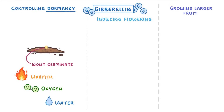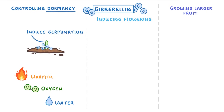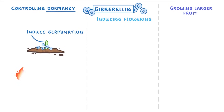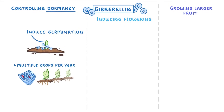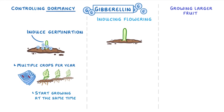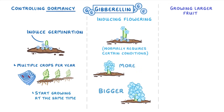By exposing seeds to gibberellin, farmers can induce germination at times of the year when it wouldn't normally happen. This means they can grow multiple crops per year and also ensure that all the plants start growing at the same time. The same thing works for inducing flowering — even though flowering normally requires certain conditions, gibberellin can induce it on demand and also encourage plants to make more flowers or bigger flowers.